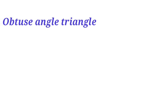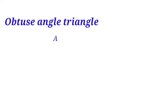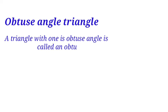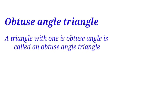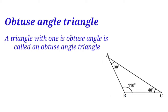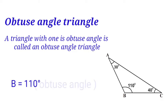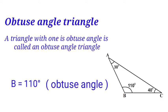Third type: obtuse angled triangle. A triangle with one obtuse angle is called an obtuse angled triangle. Obtuse angle means more than 90 degrees and less than 180 degrees. Observe triangle ABC — angle B equals 110 degrees, which is an obtuse angle, and the remaining two angles are acute angles. This is an example of an obtuse angled triangle.